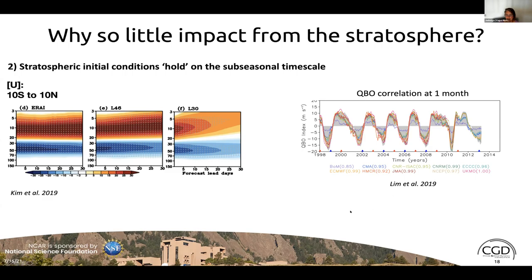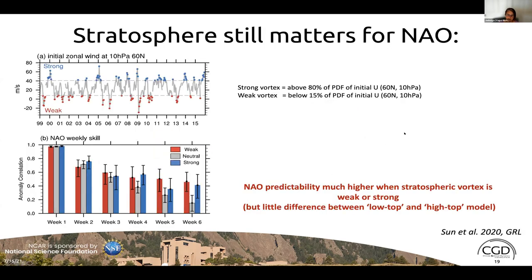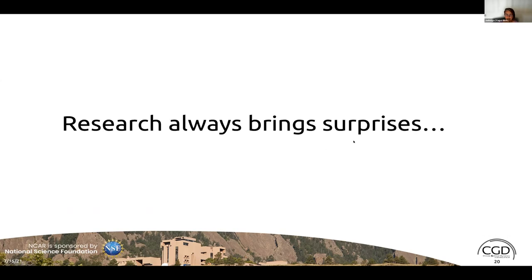This doesn't mean the stratosphere is unimportant. In a study led by Lantao Sun from CSU, we combined CESM1 30-level and 46-level ensembles into a 20-member ensemble and examined NAO predictability conditioned on stratospheric vortex state — initial 10 hPa / 60°N zonal mean wind separated into strong, weak, and neutral vortex states. In weeks 5 and 6, there is much better NAO predictability for weak and strong vortex events compared to neutral events, though there is no difference between the low-top and high-top model in capturing this.